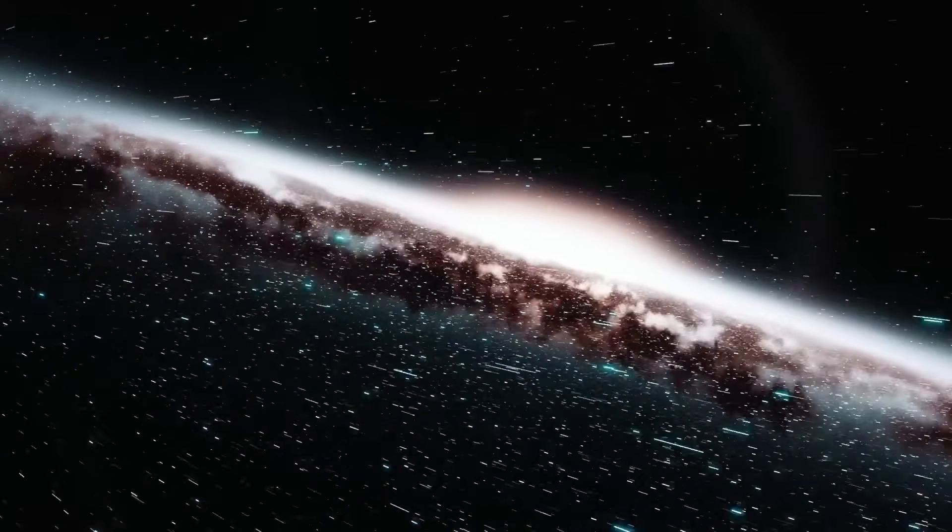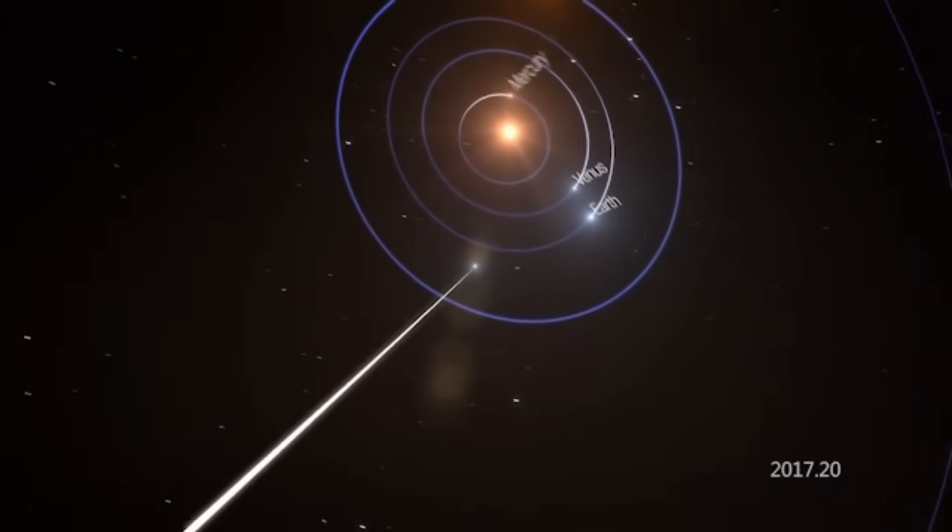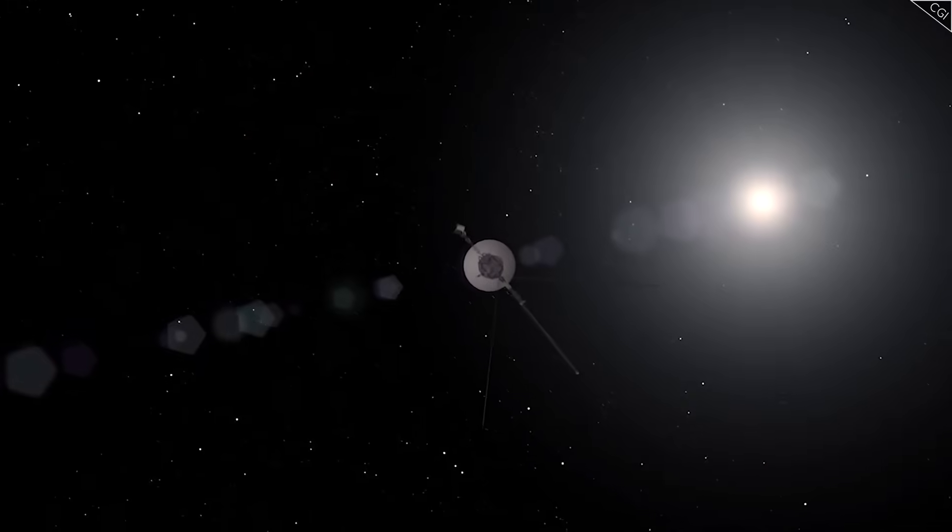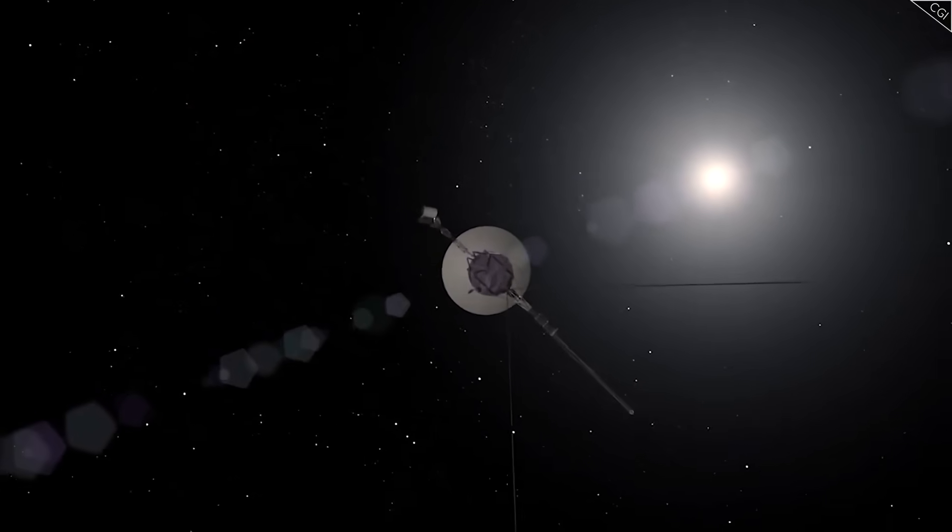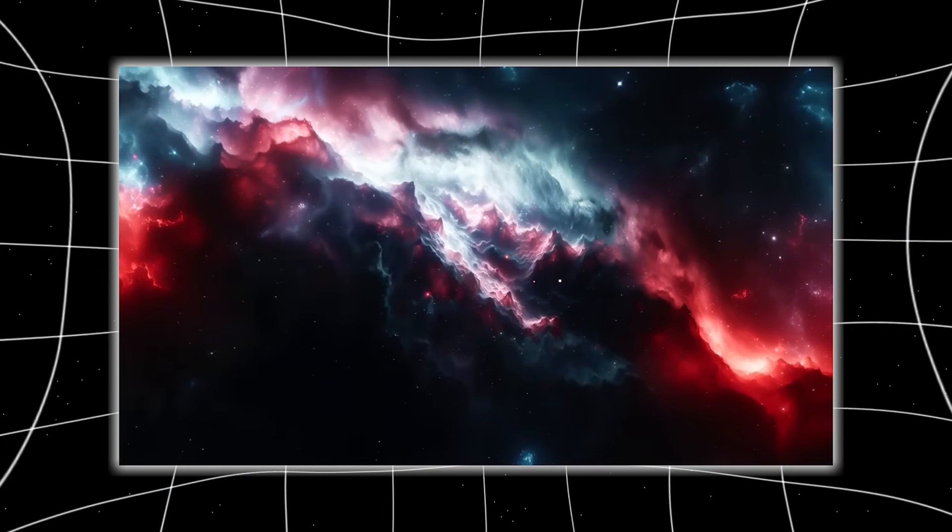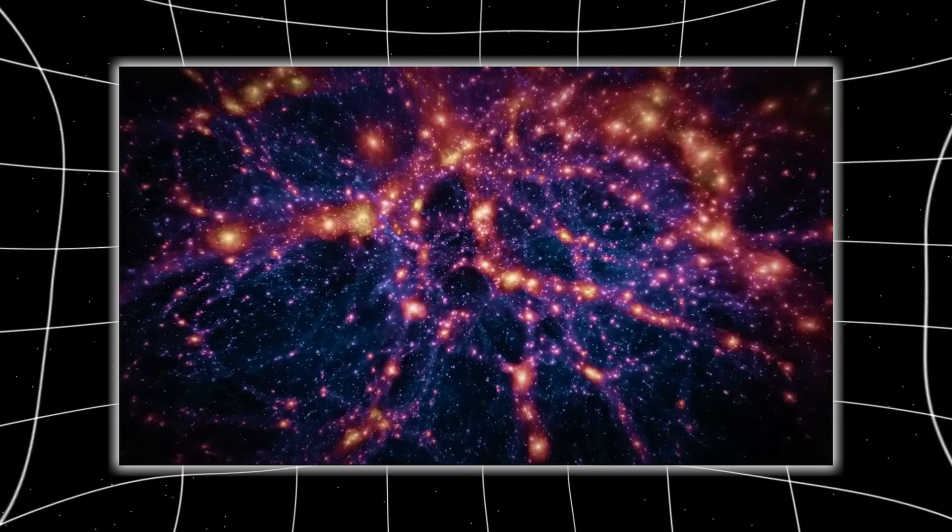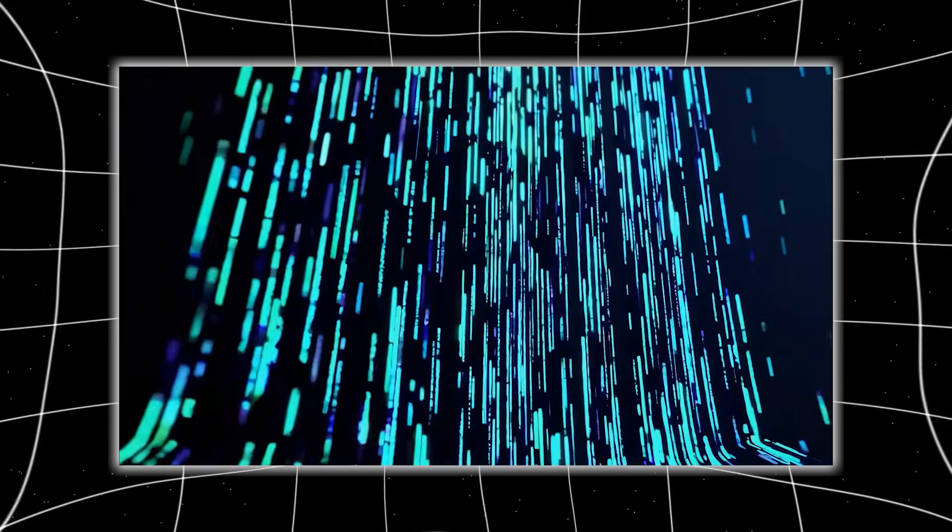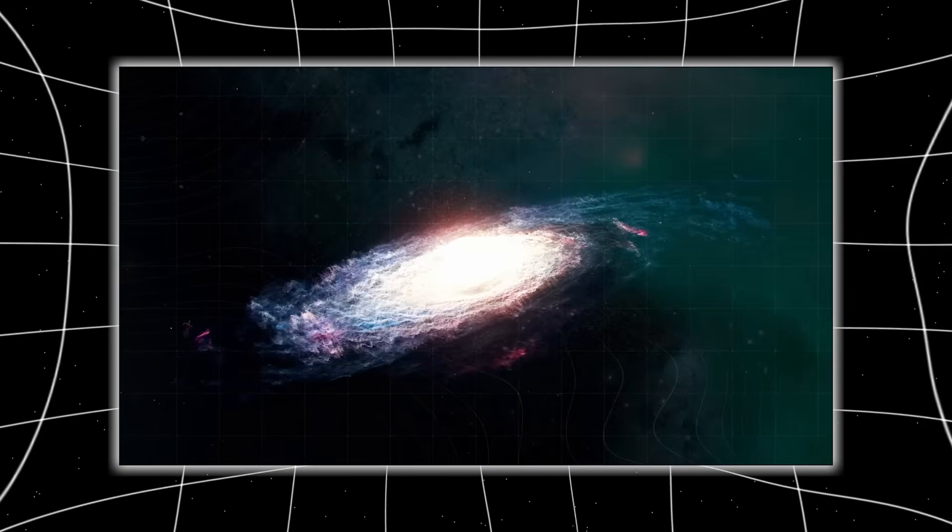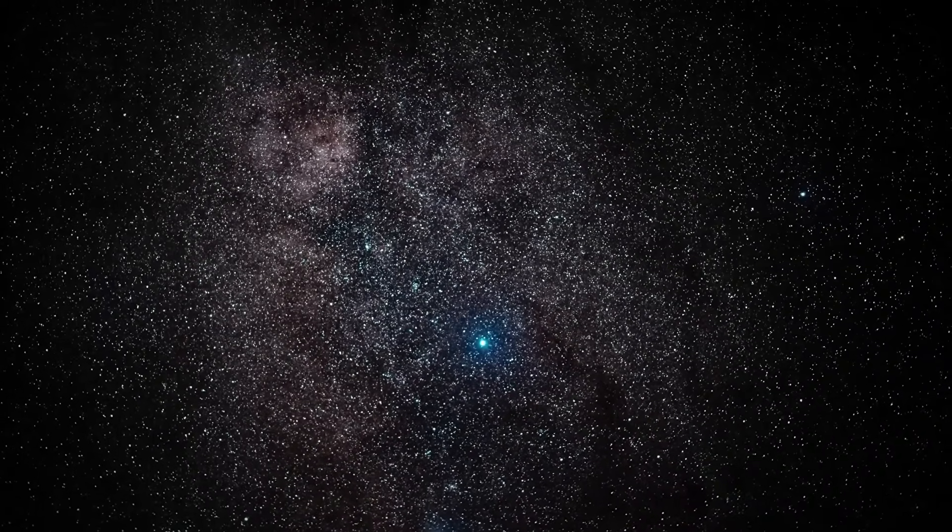But here's where the story flips upside down. A transmission sent toward 3I Atlas using Voyager's instruments may have received a structured return signal. Data leaked from mission logs show that during the Atlas alignment window, Voyager's signal pattern returned with symmetric, periodic bursts, far too orderly to be noise. Imagine sending a message into the darkness and hearing a rhythm echo back, a rhythm that follows no known astrophysical behavior. Could it be data? Could it be language? Or was this simply a cosmic coincidence too elaborate to ignore? Either way, scientists aren't sleeping well.